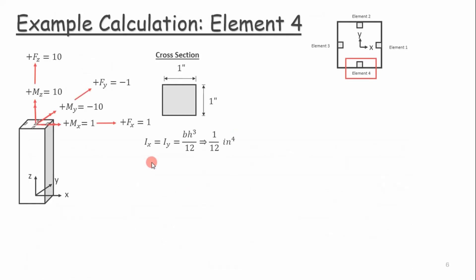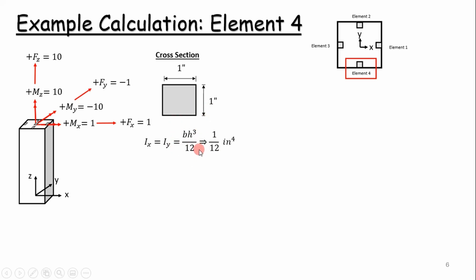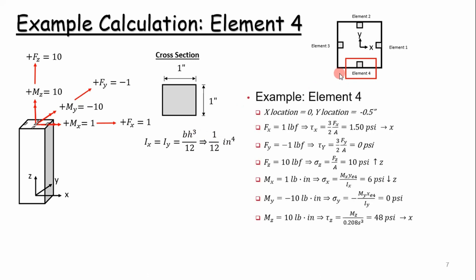Now we'll go into an example calculation to reinforce this concept. We have six loads — three moments and three translational loads — acting at a face. To determine the stresses, first you want to determine your area moments of inertia. In this case we're looking at a 1 inch by 1 inch cross section. Since this square is symmetric across the x and y faces, the area moments of inertia are equal to each other — using the fundamental equation, our area moment of inertia is 1/12 inches to the fourth. We are going to be looking at element 4, so we pull those equations from our table to figure out what stresses result from these loads.